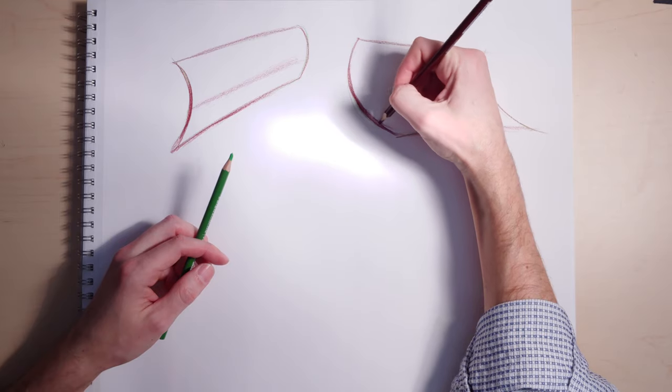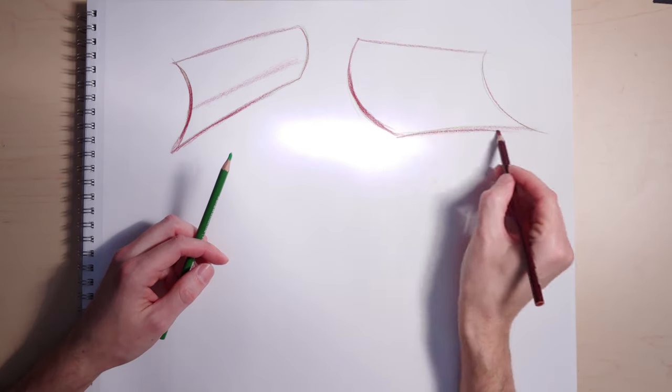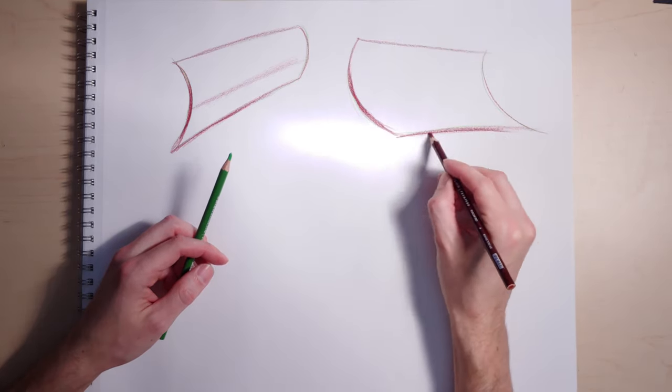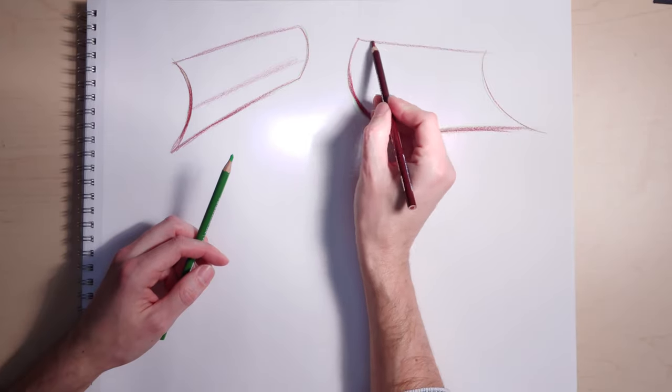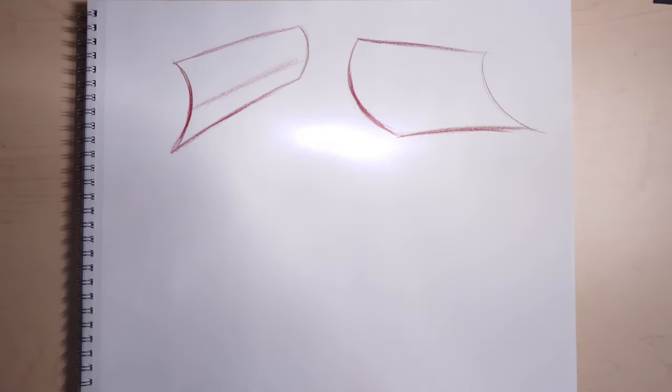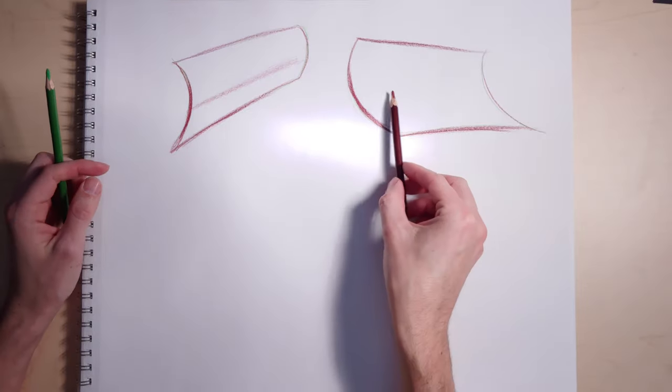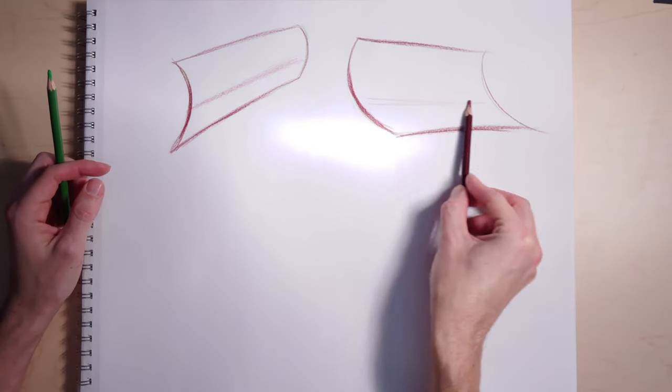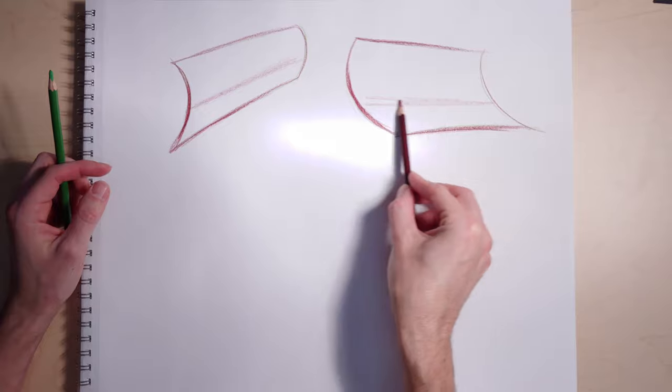Whenever you draw larger, a mistake of a sixteenth of an inch doesn't matter at all. But when you draw really small, every sixteenth of an inch matters. If you're off one centimeter on the size of a piece of paper, you might notice it.